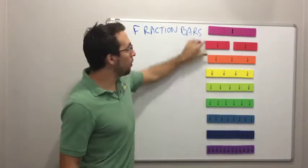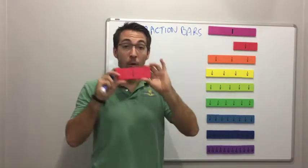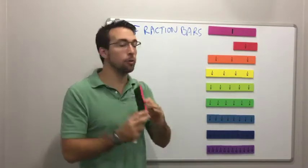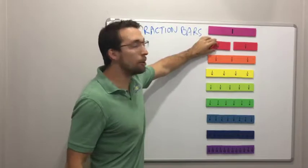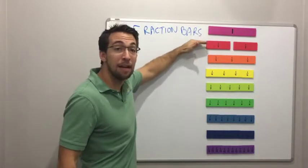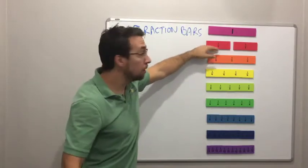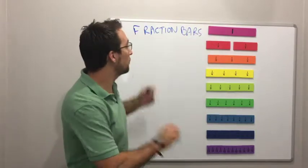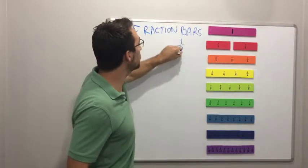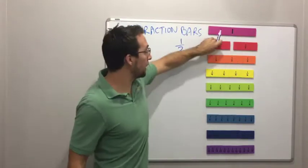Look, we have one piece, one out of two. Remember everybody, your numerator tells you how many pieces you have out of the denominator tells you out of the total. So how many out of one out of two. One out of two.